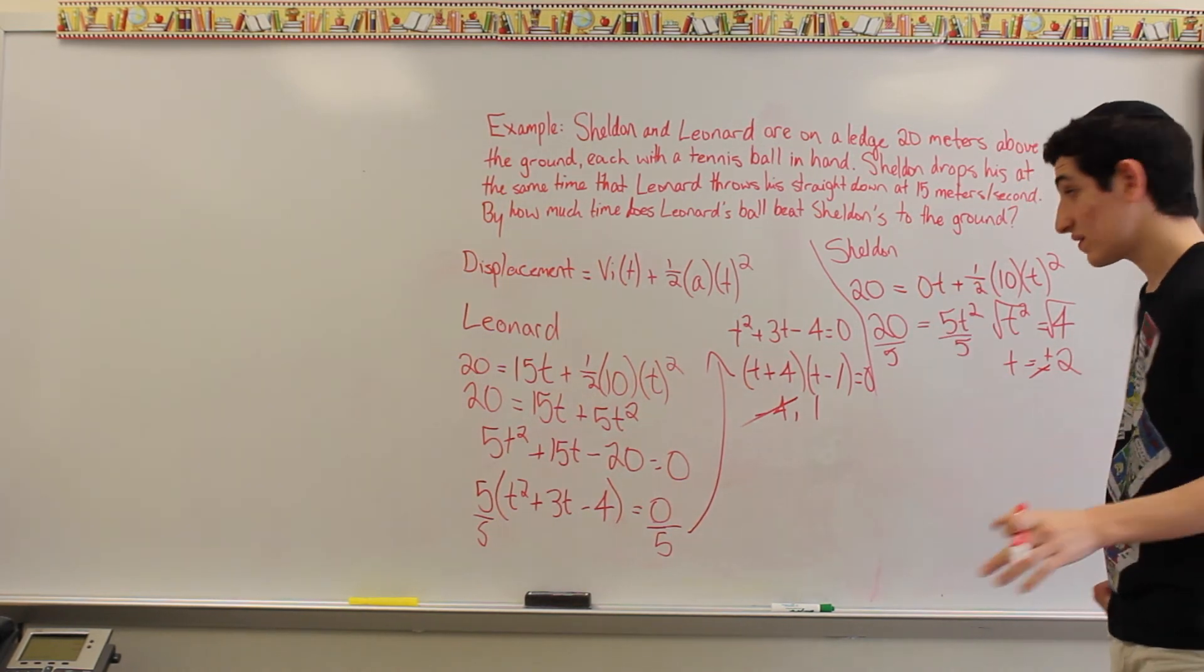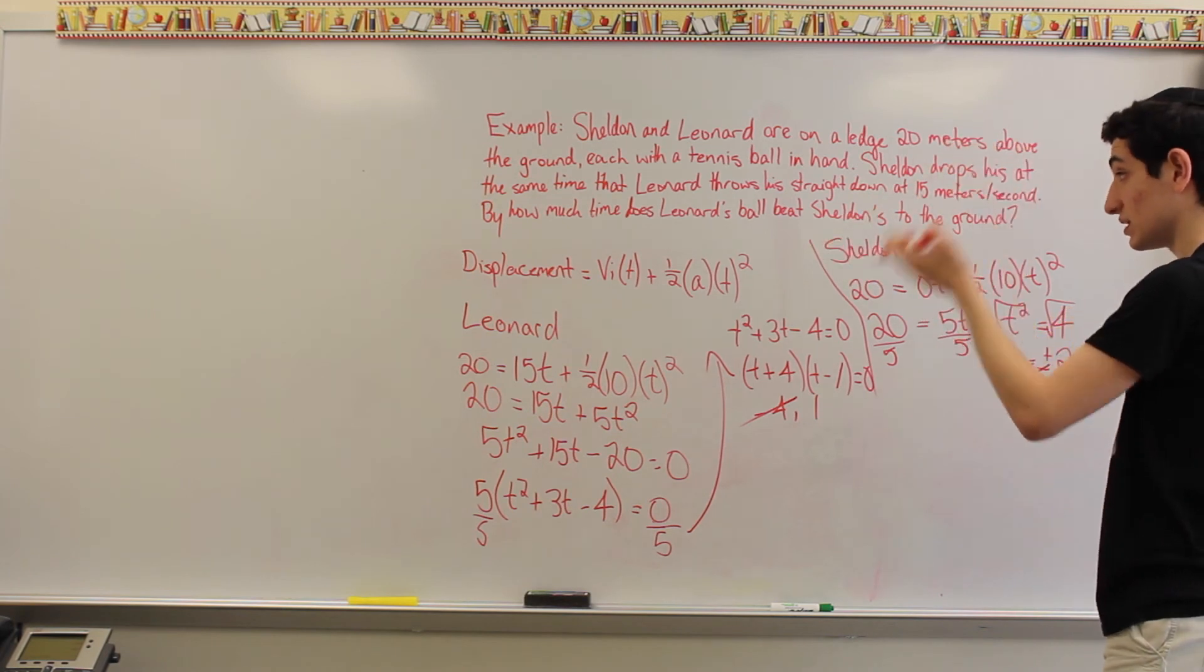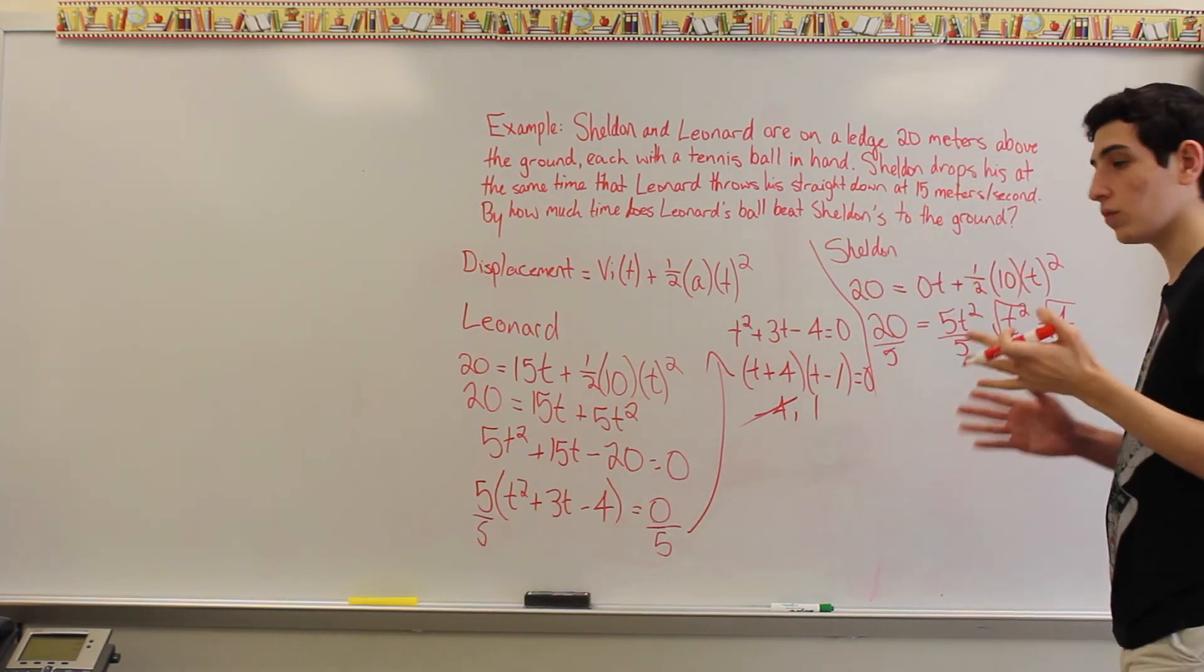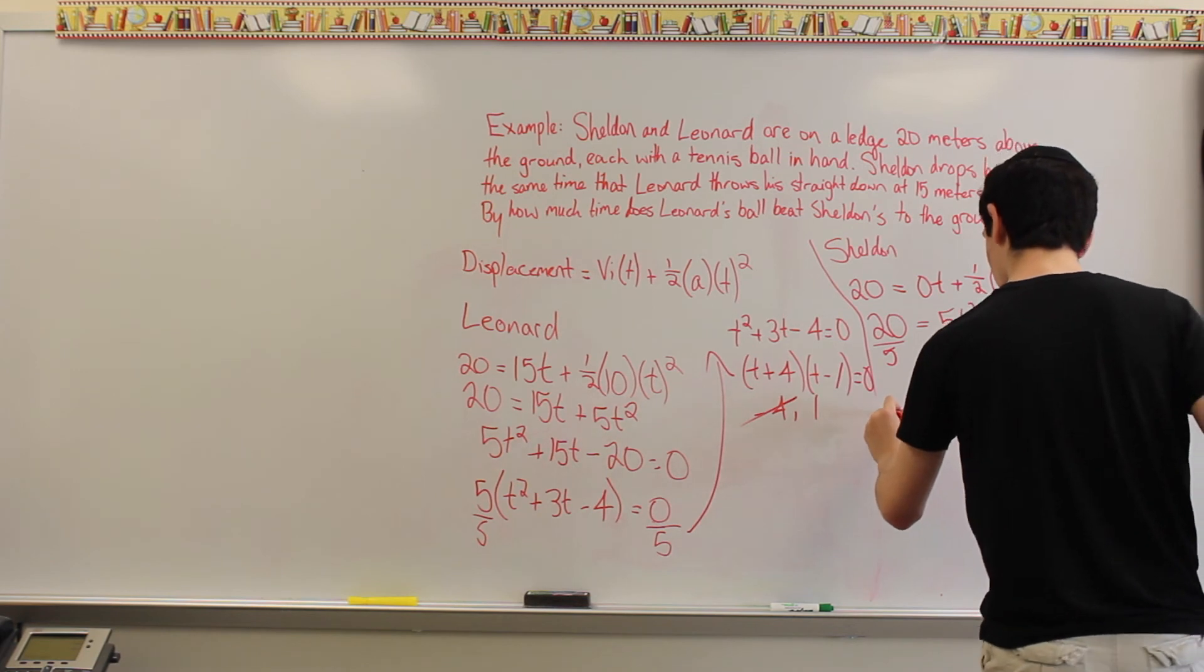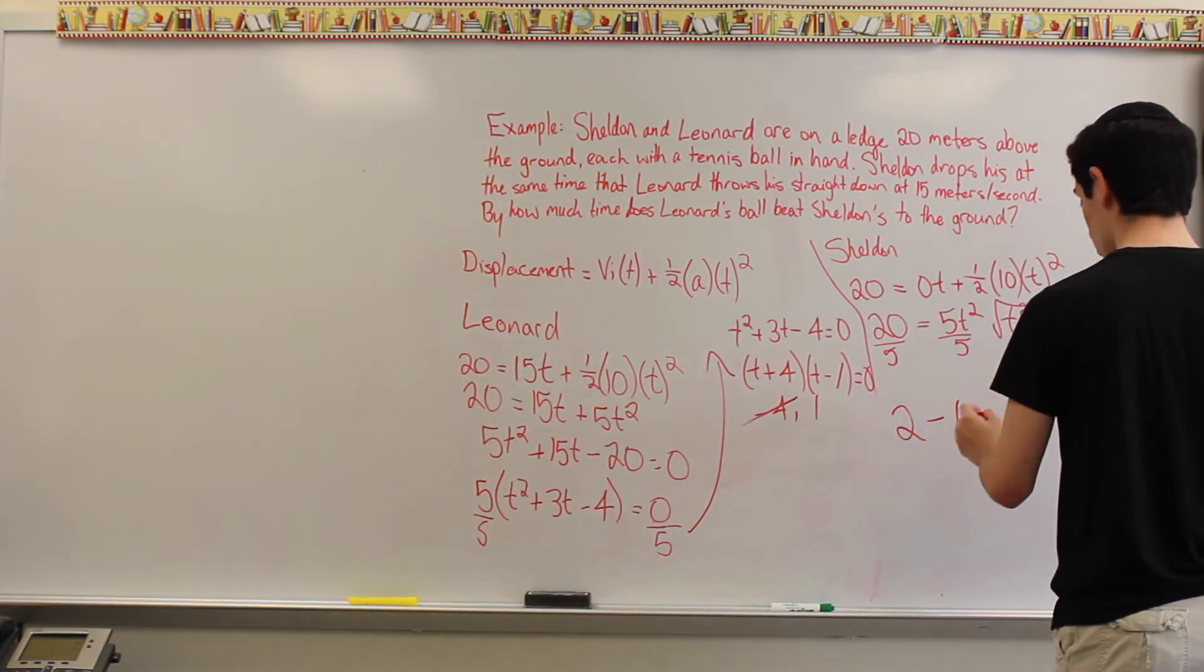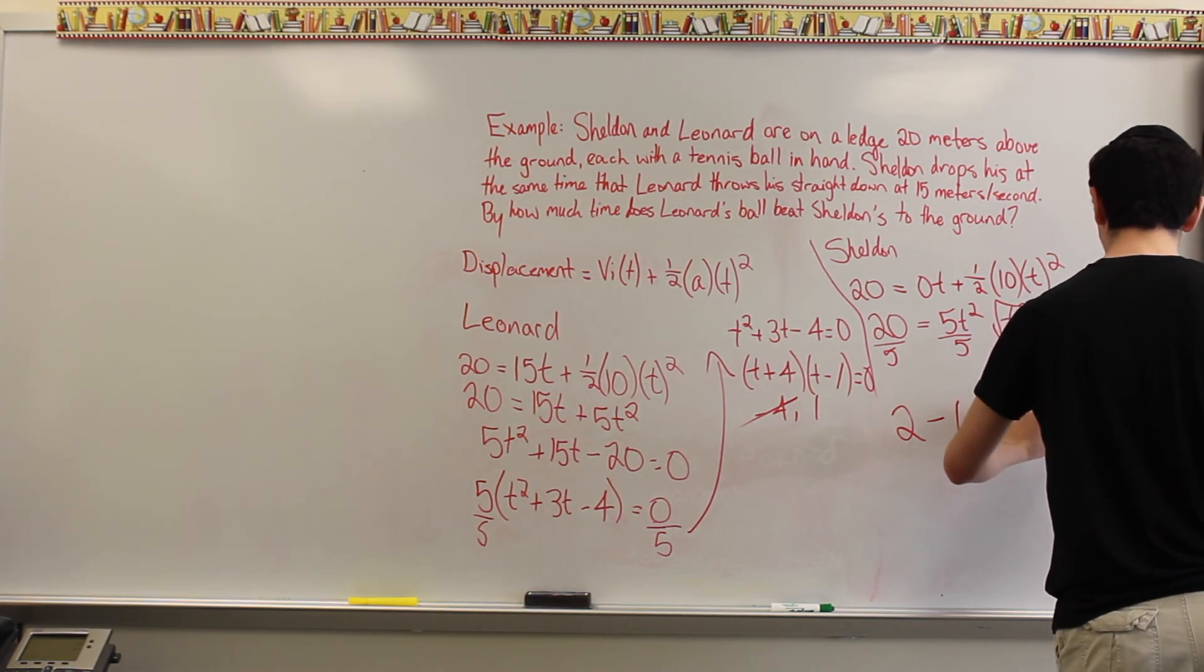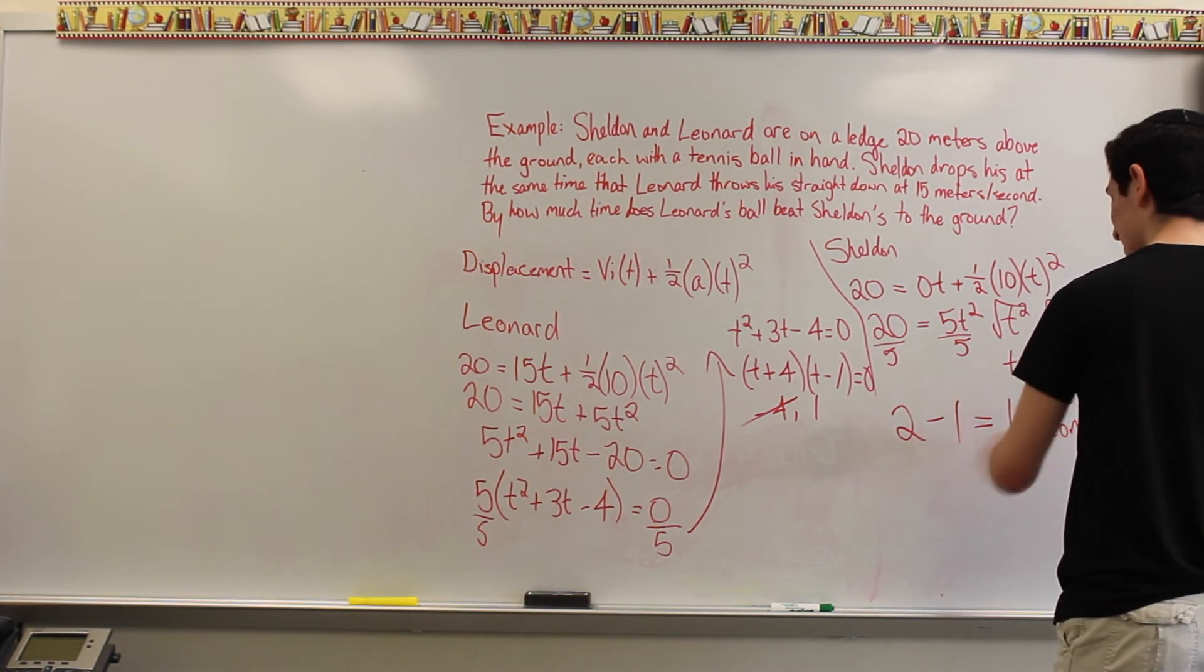But, we're not done yet, because we need to find the difference, or how much time is in between the two balls hitting the ground. So, we have 2 seconds, which is Sheldon's value, minus 1 second, which is Leonard's value, and that equals 1 second difference. It's that simple.